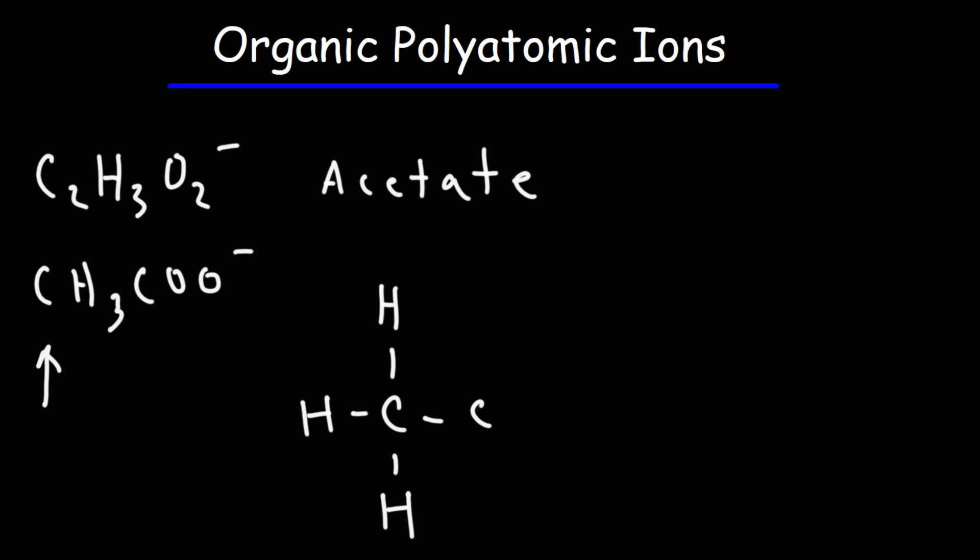Oxygen has six valence electrons. It needs two more to get to eight, so oxygen will typically like to form two bonds. When oxygen has two bonds, it's going to be neutral in charge. When oxygen has one bond, it's going to have a negative charge, since it prefers to have two bonds.